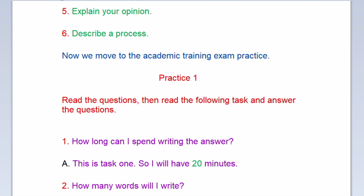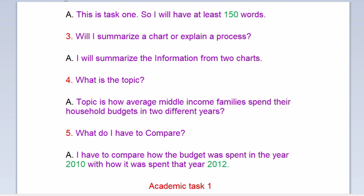Now we move to the academic training exam practice. Practice number one. Read the questions, then read the following task and answer the questions. Question one: How long can I spend writing the answer? This is task one, so I will have 20 minutes. Question two: How many words will I write? This is task one, so I will have at least 150 words. Question three: Will I summarize a chart or explain a process? I will summarize the information from two charts.